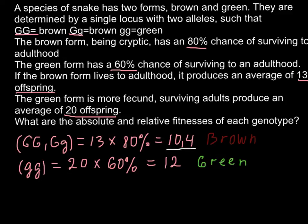So these are the absolute numbers for the brown and for the green phenotypes, so we answered the first question: what is the absolute fitness? And as you see, green is more fit. Though the survival rate is less, that is 60%, this phenotype or genotype is more fecund, so the absolute number is greater.